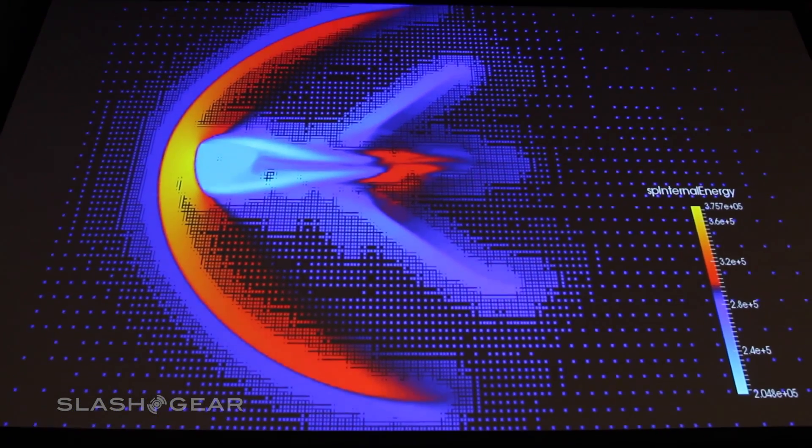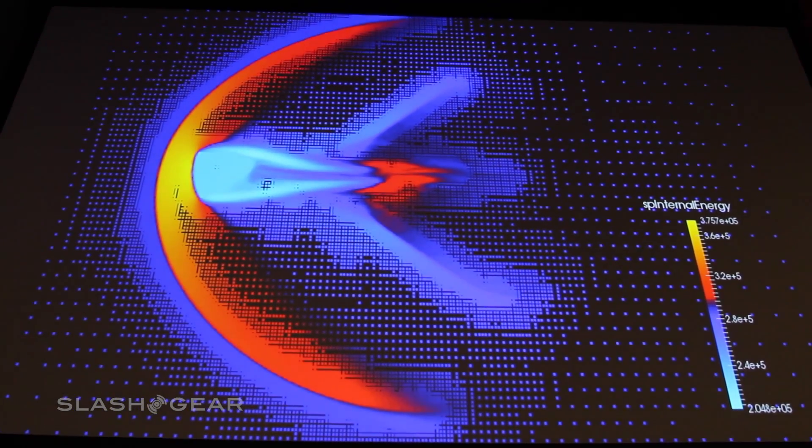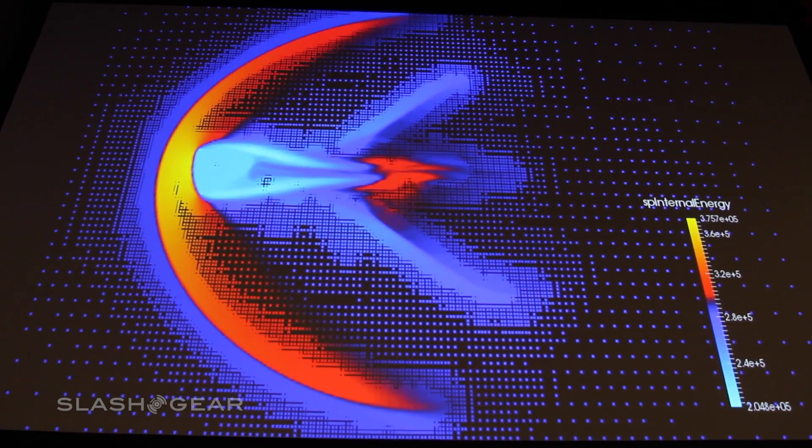And so in each of these grid points, we do calculation. So this is a picture of the specific internal energy, if you like, the temperature of every point on this grid.